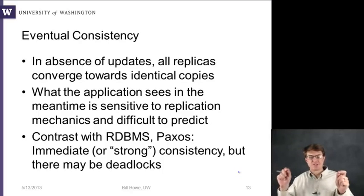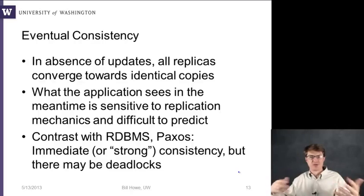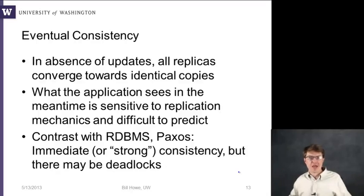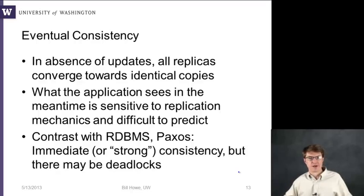What eventual consistency means is: in the absence of updates, all replicas will eventually converge toward identical copies. As long as things don't continuously change, as changes settle down, we'll all eventually see the same value — all your friends will see your status; they won't be permanently stuck looking at an old one. But what the application sees in the meantime is sensitive to internal implementation details and is therefore difficult to predict, making it hard to reason formally about what eventual consistency means.